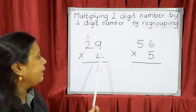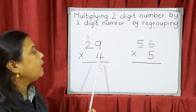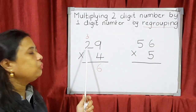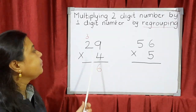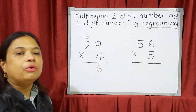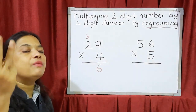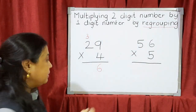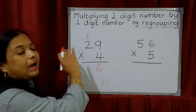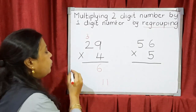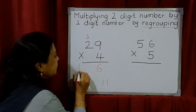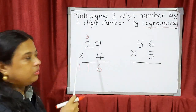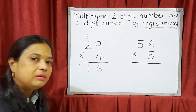Now we say 4 twos, which is 8. Then 8 plus 3 carry: keep 8 in the mind and count 3 on the fingers — 9, 10, 11. So the answer is 11. There is no hundreds column here, so we write 11 as it is. The final answer for 29 × 4 is 116.